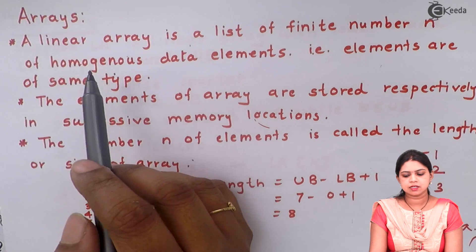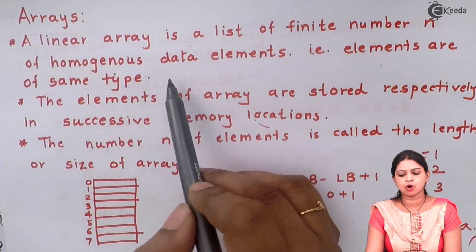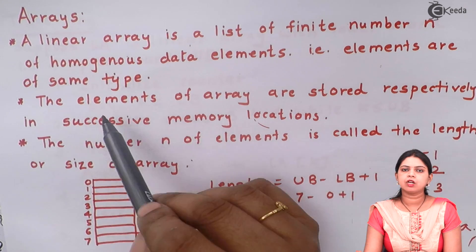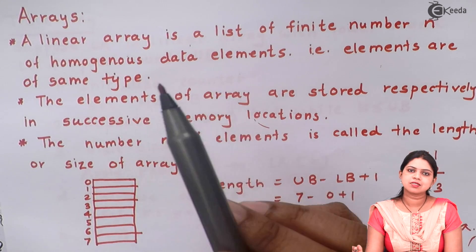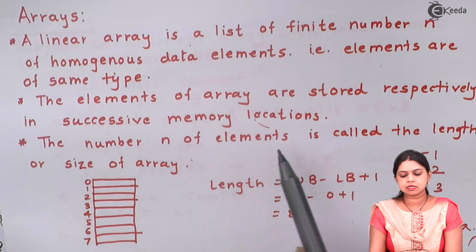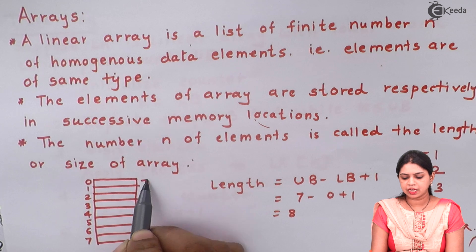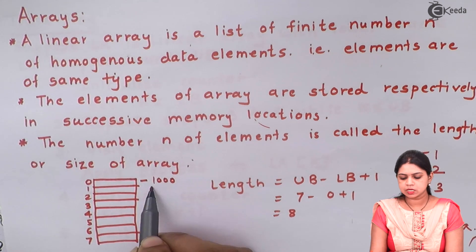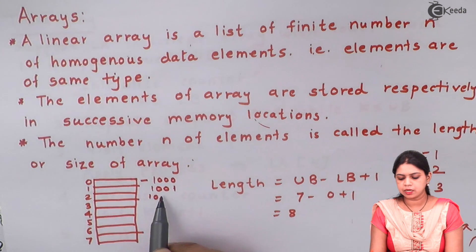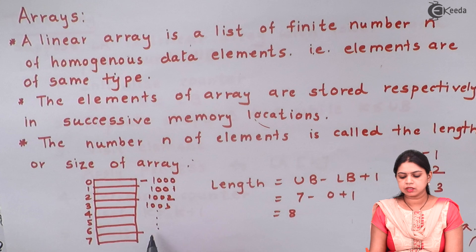So the definition of array is: array is a list of finite number of homogeneous data elements. Homogeneous data element means all the elements should be of same type. The elements of array are stored in successive memory locations. Suppose if my first element I have stored at 1000, then obviously my next element will be getting stored at 1001, my next element will be getting stored at 1002, 1003, and so on.